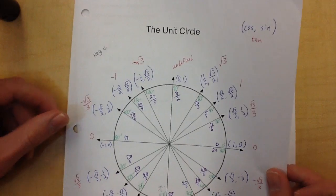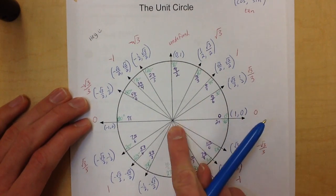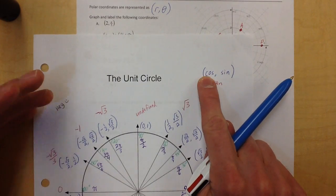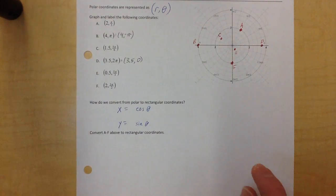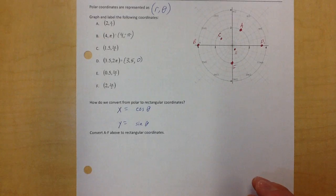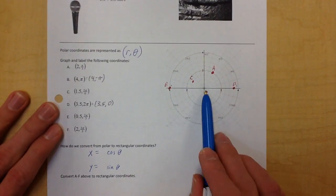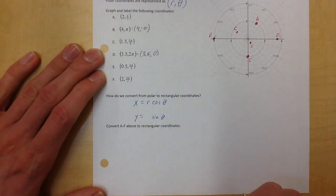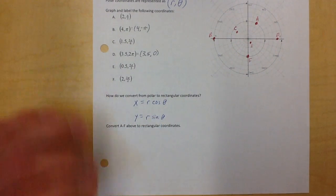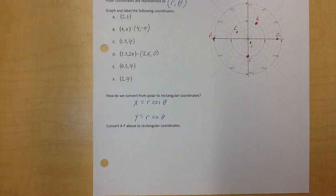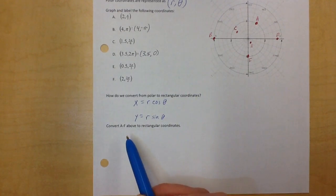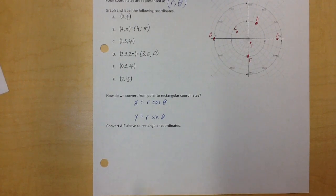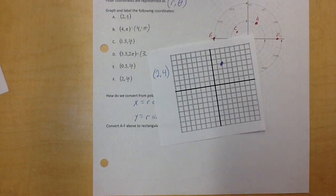When we were dealing with the unit circle, we had a radius of one. So it was one times cosine theta and one times sine theta. Well, now it's not one anymore — it's going to be whatever the radius is. So x = r cosine theta and y = r sine theta. We're going to convert each of the ones we plotted above into rectangular coordinates — meaning, where would that point land on a rectangular coordinate system?